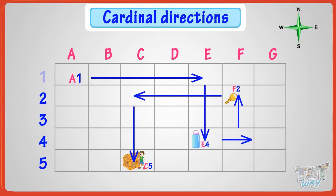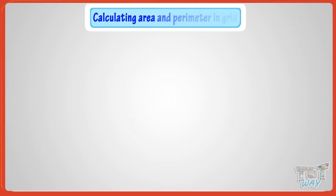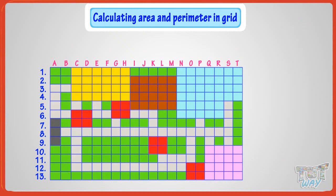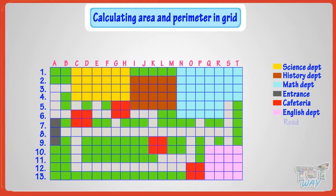We will learn calculating area and perimeter in grids. Here, we have a map of university. Yellow area shows the science department. Brown area shows the history department. Blue area shows the math department. Black area is the entrance gate of university. Red area shows canteen areas. Pink area shows the English department. Gray area shows the roads. Green area shows the garden area.